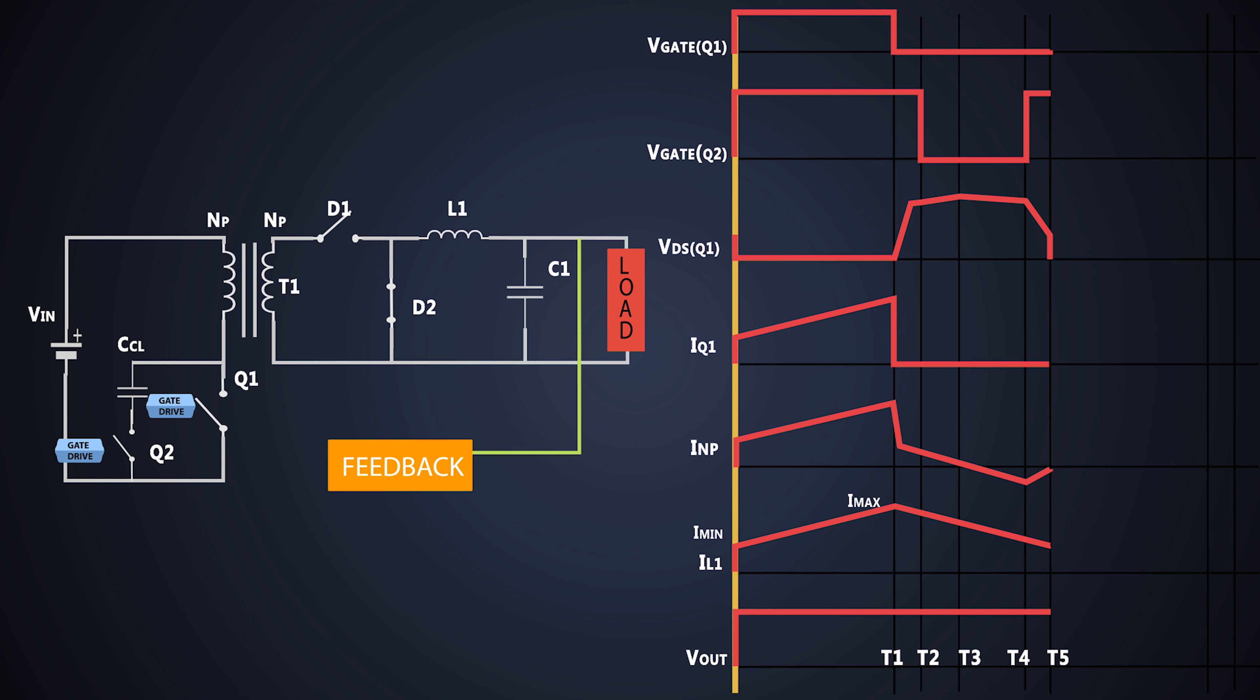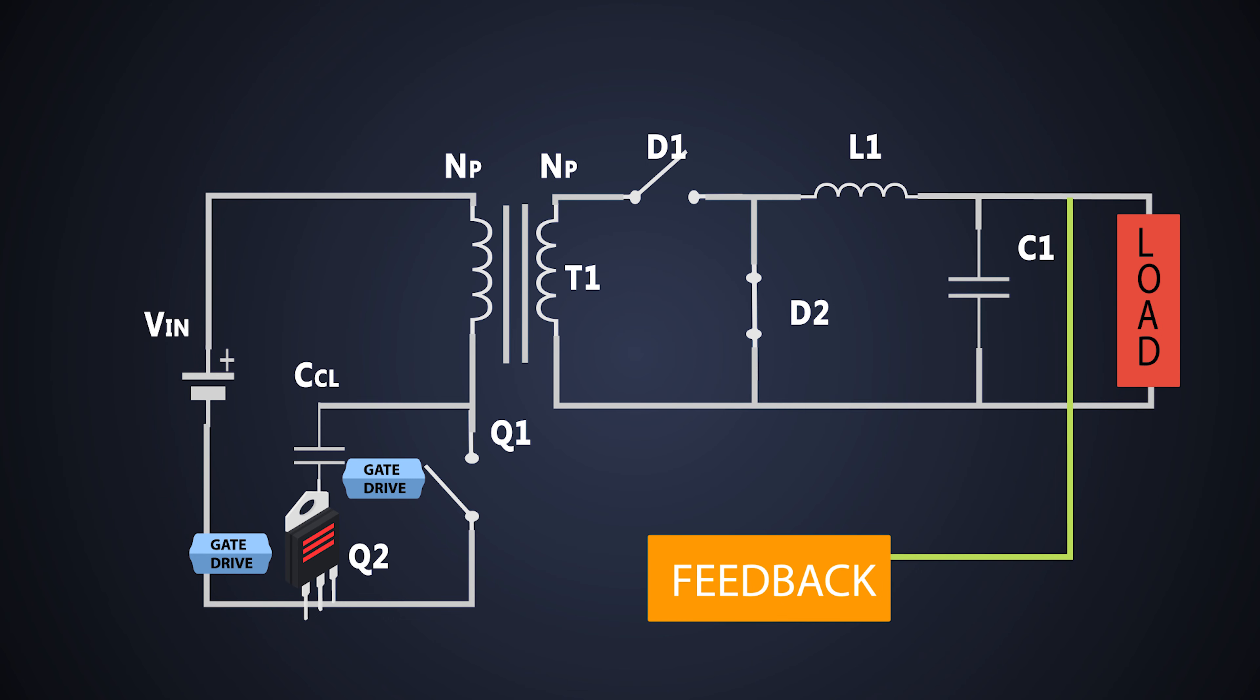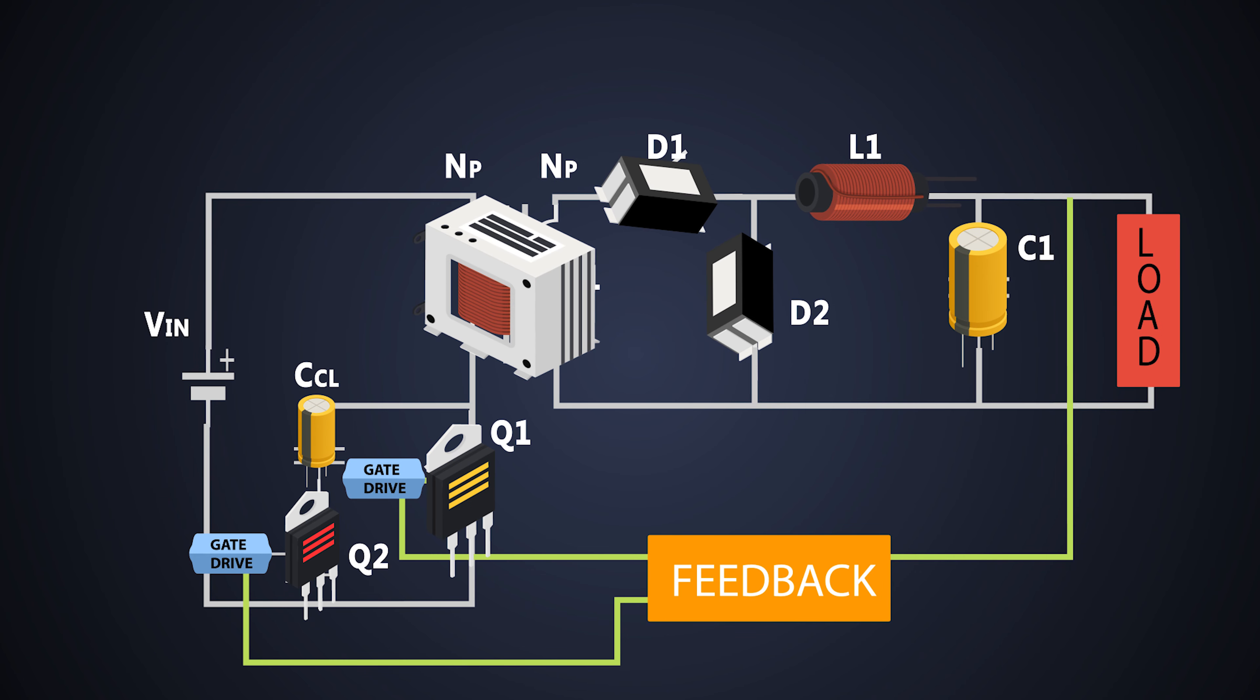So after that, this same process is repeated to provide the constant power to the load. There are several advantages of this topology, such as we can operate the MOSFET above 50% duty cycle ratio of PWM pulses.